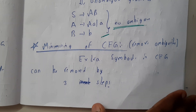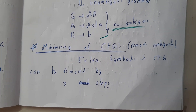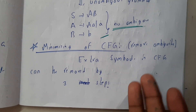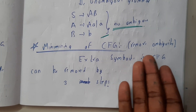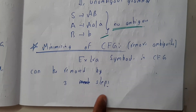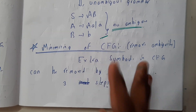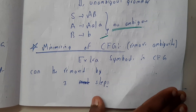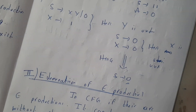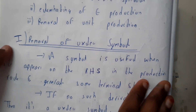Hello guys, we are back with our next tutorial. In this tutorial let us go through minimization of context-free grammar. Minimization of context-free grammar is nothing but we are trying to remove the ambiguity problem. There are three different steps in doing this. The first step is removing the useless symbols — if there are any unused symbols,